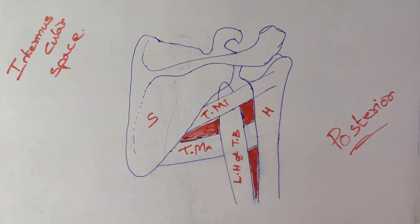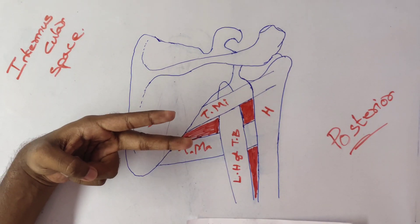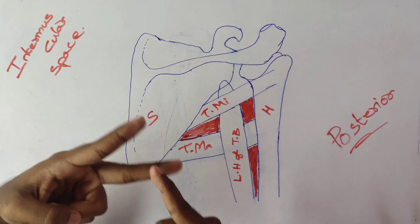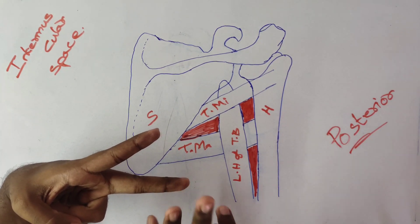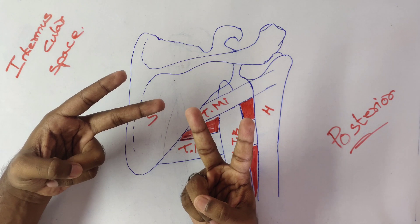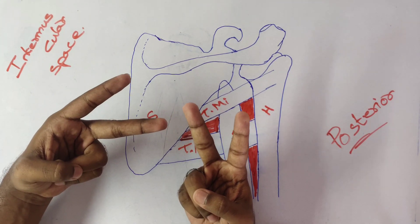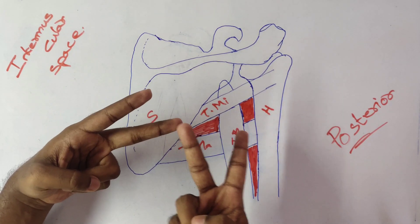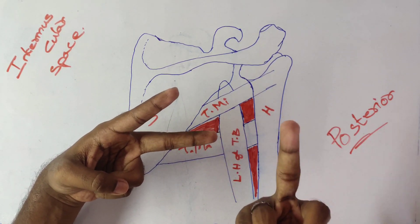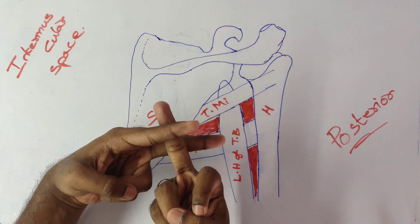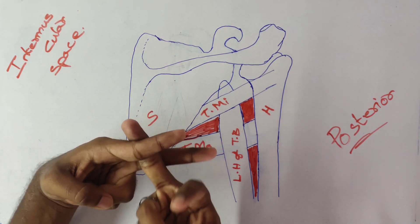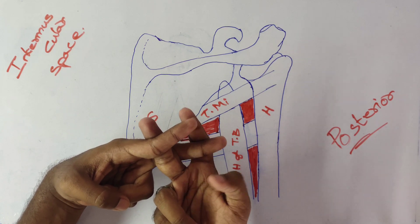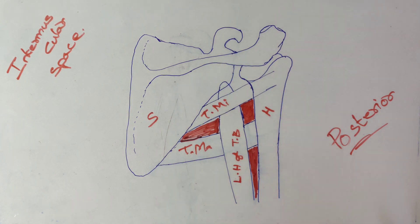For a visual reference, take two fingers of the left hand — the index finger and middle finger — representing teres major and teres minor muscles. With the right hand, the middle finger represents triceps brachii and the index finger represents the humerus. The space between the middle fingers is the quadrangular space; below is the lower triangular space, and above is the upper triangular space.